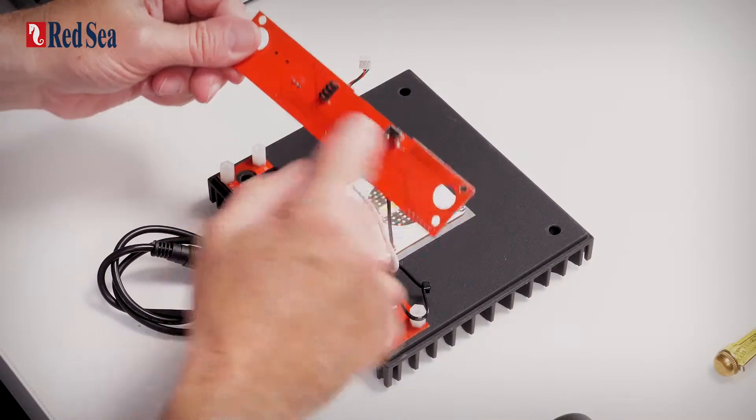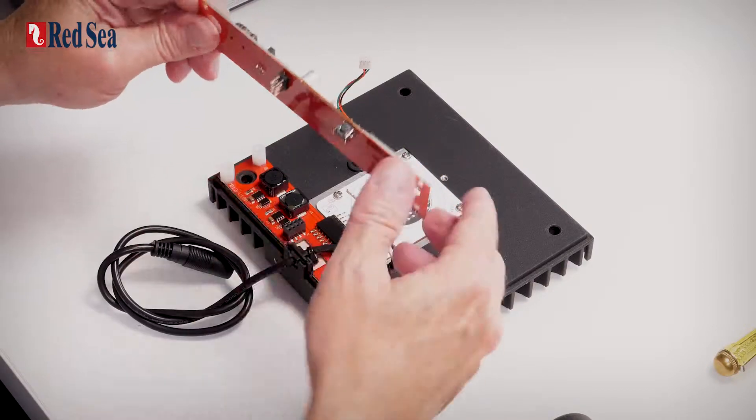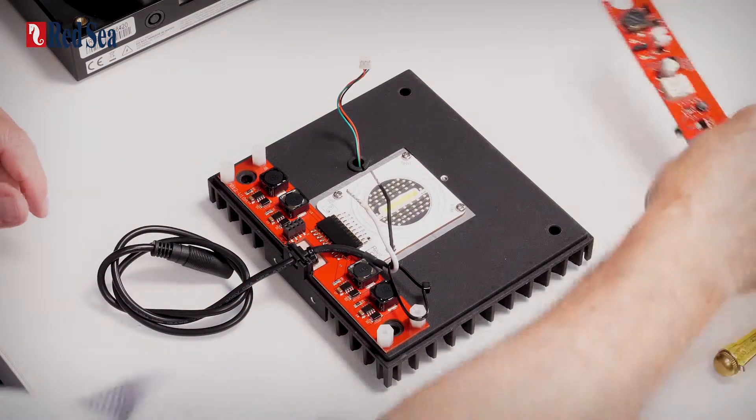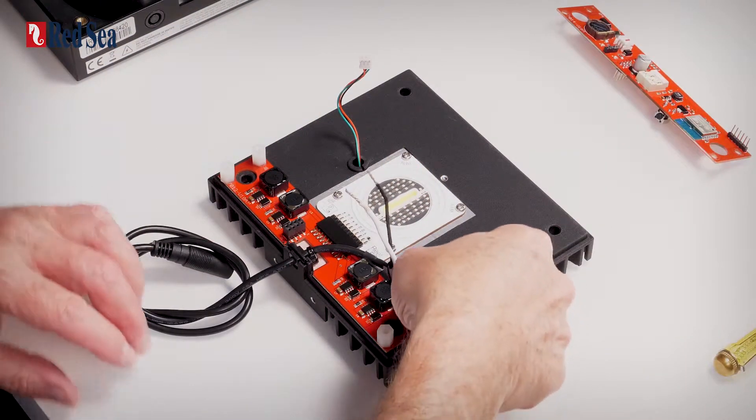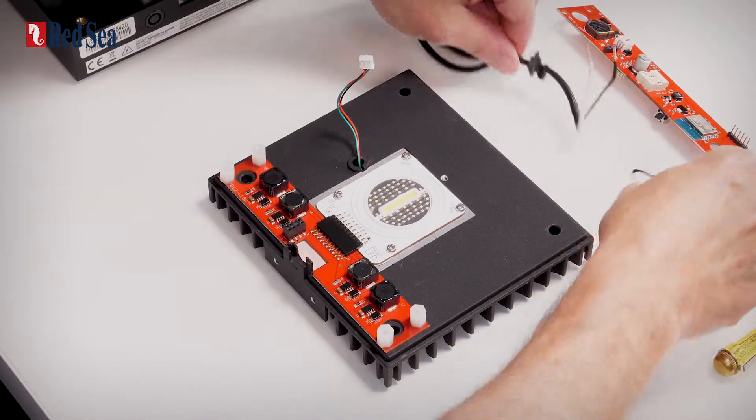There is a connector there and you need to pull it up vertically so as not to damage the pins on the connector. The DC cable now comes out.